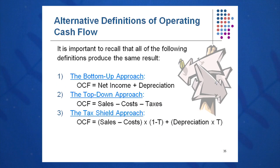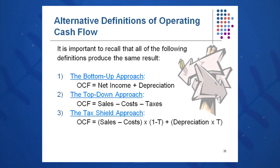Number one, the traditional method is OCF equals EBIT plus D minus T. That is the traditional one and you can use that for any case, even if your income statement includes interest expense. That one's always the safe one, and we've learned that in chapters two, three, and ten.